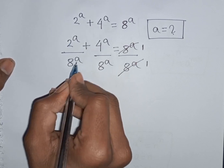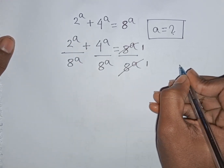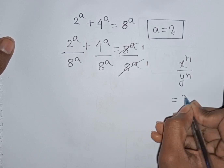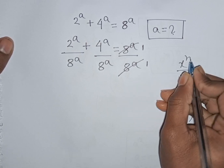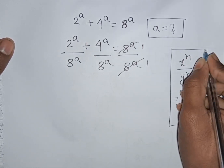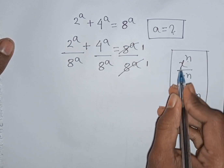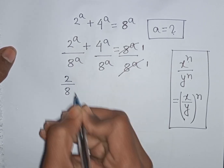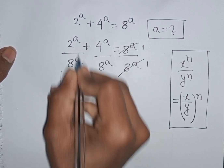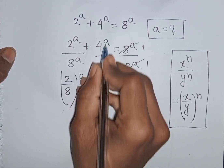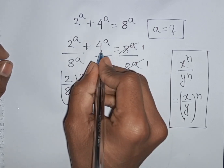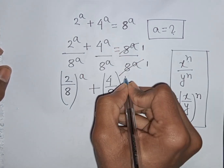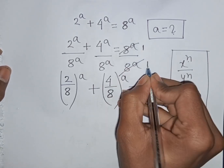Now we see same power but different base. Remember this exponential rule: x power n over y power n is equal to (x over y) power n. So according to this rule we can write (2/8) power A plus (4/8) power A is equal to 1.